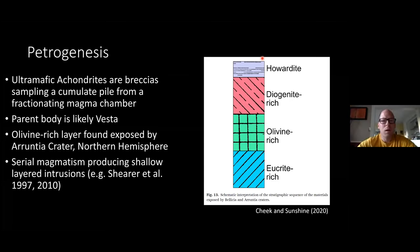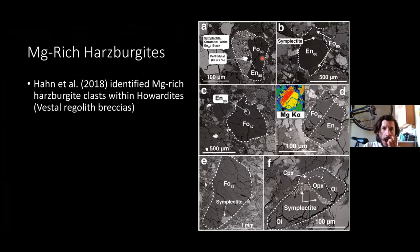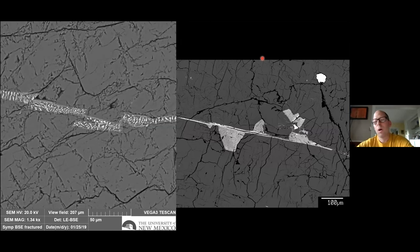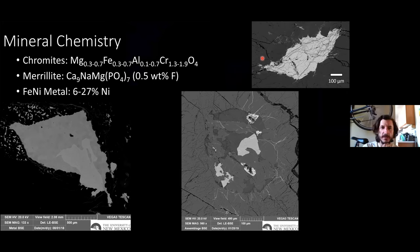Another question about whether the chromite compositions — chrome number and magnesium number — are similar to what we see in diogenites. Zoltan says he's not sure and will have to look it up. There is high variability in these chromite compositions, and he's not sure the diogenites have that kind of variability.